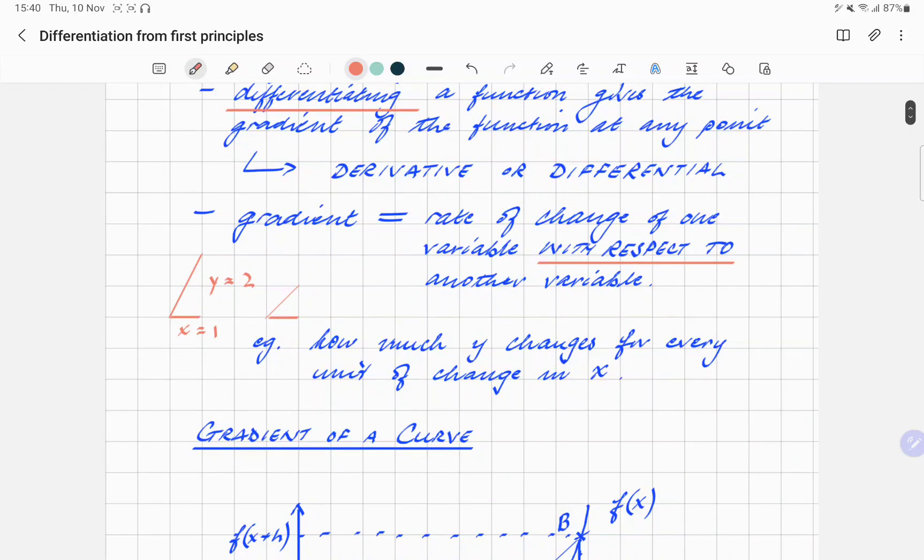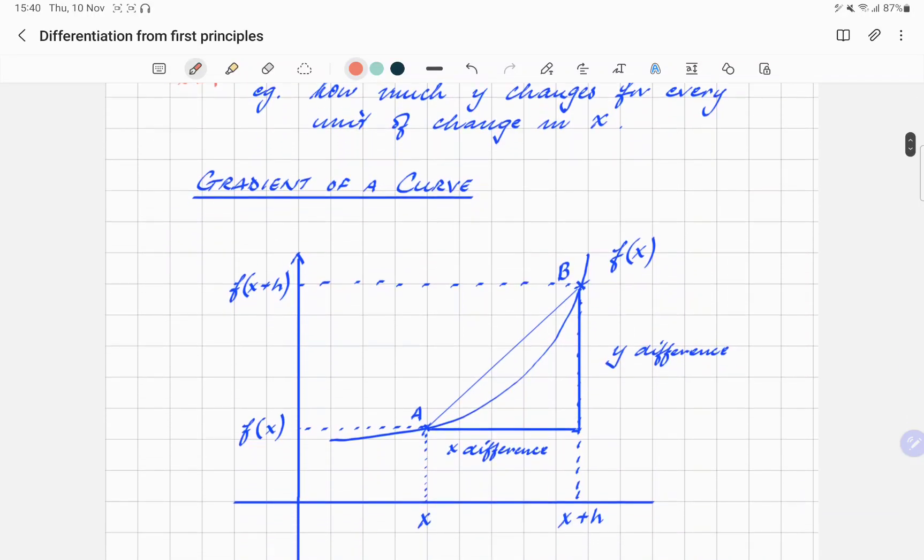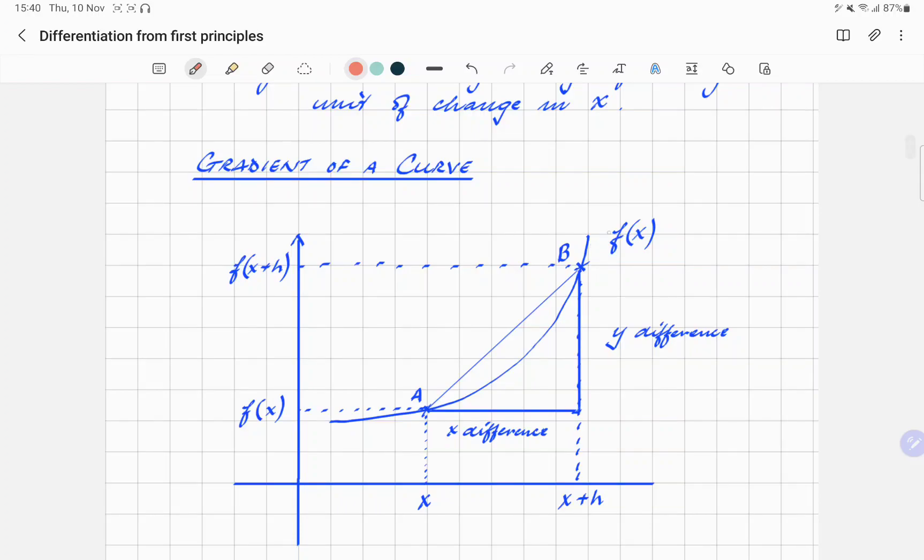Now, given a curve that we have here, whatever that curve might be, we want to find the gradient at a. The point a has coordinates x, and some function of x gives you the y value. Now if we were to do it visually, you might estimate that like a tangent or something - it's something like that. That might be your gradient. But what's a mathematical way of doing it algebraically?